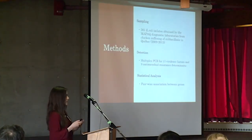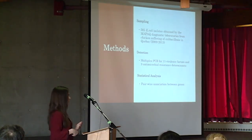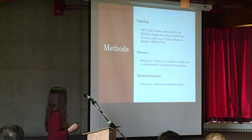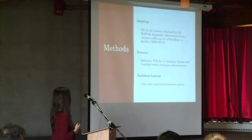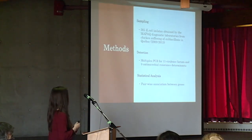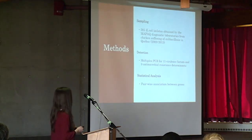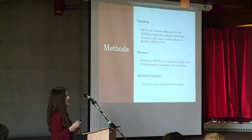Our collaborators at MAPAQ in Quebec, which is the Ministry of Agriculture, Fisheries, and Foodstuff, isolated 585 E. coli isolates for us, obtained from chickens suffering from colibacillosis between 2009 and 2013. We then used a multiplex PCR to screen for a variety of virulence factors and antimicrobial resistance determinants, and used pairwise association statistics between the genes.